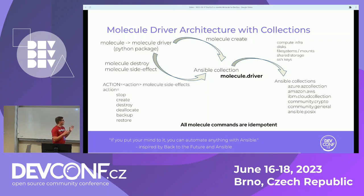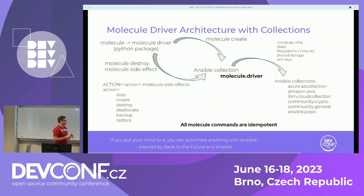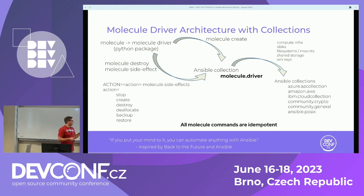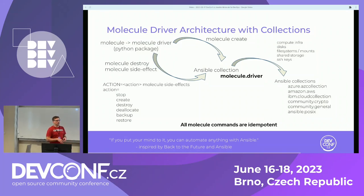A brief overview of how this looks architecturally: you run a Molecule command which calls the driver. The driver determines which playbooks are executed, and these playbooks contain links to the Molecule driver collection — where 'molecule' is the namespace and 'driver' is the collection name. This collection is a wrapper around other collections which actually manage the resources: the Azure AZ collection, Amazon collection, community.crypto for managing SSH keys — it ensures SSH keys are uploaded and will create one if you don't have one, which is very handy in CI environments. Community.general and community.posix handle disk and file system management.